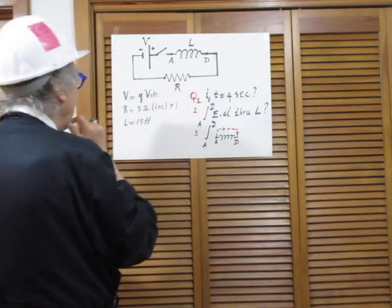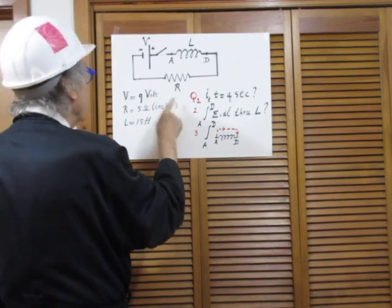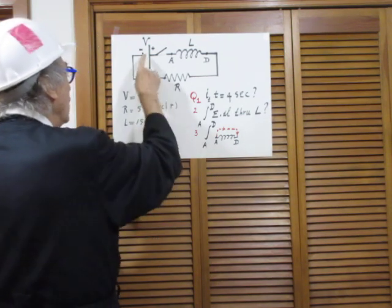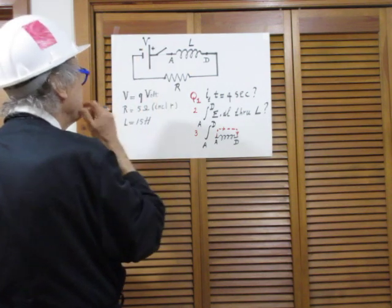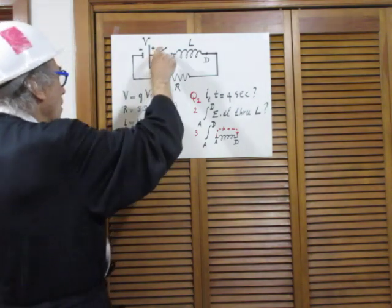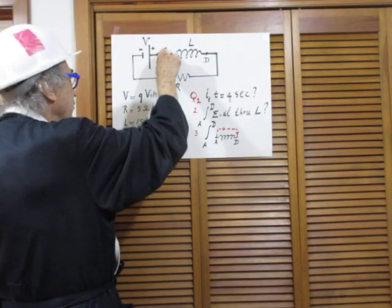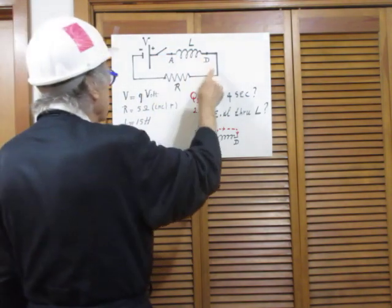The resistance R here has a value of 5 ohms. That includes an extremely small internal resistance of the battery. That's included in the 5 ohms. At time t equals zero I throw the switch.